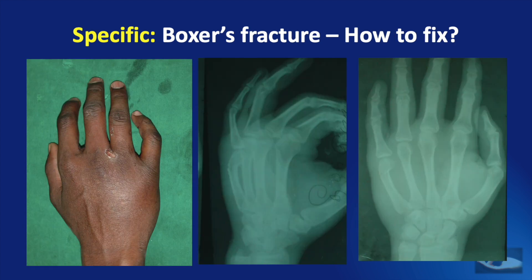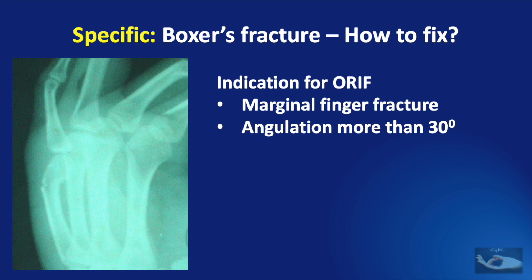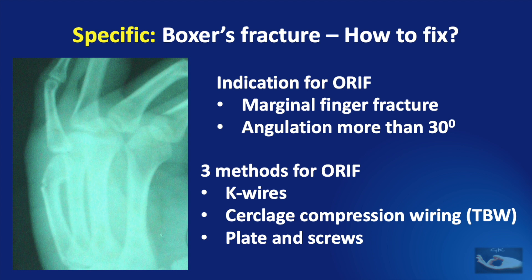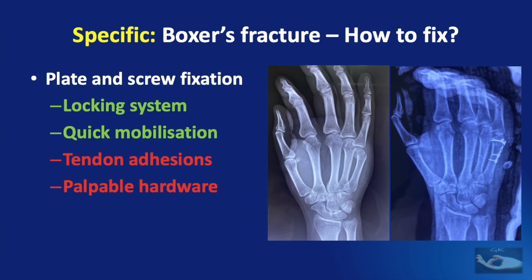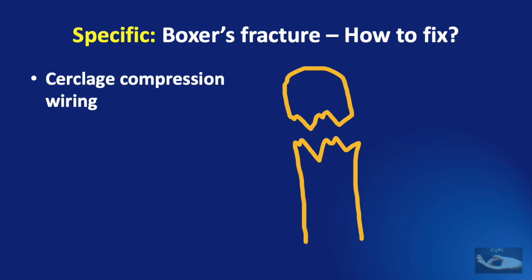The boxer's fracture — a fracture of the neck of the 5th metacarpal — is quite common. Usually we need to fix it because it is a marginal finger fracture, and if the angulation is more than 30 degrees, it is ideal to fix this fracture. There are three commonly used methods: K-wires, circlage compression wiring or tension band wiring, and the use of plate and screws. Plate and screw fixation can be done using the locking system and we can start quick mobilization, but there is always the risk of tendon adhesions and palpable hardware.